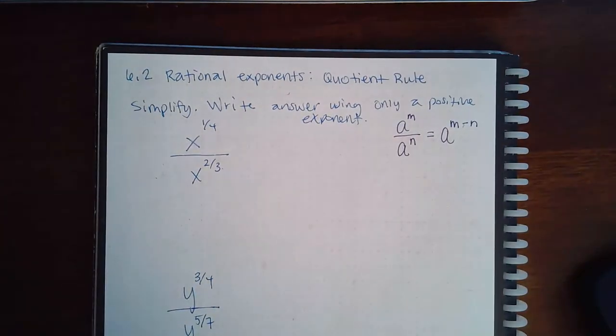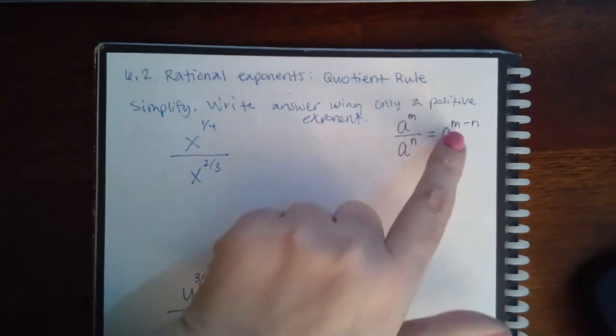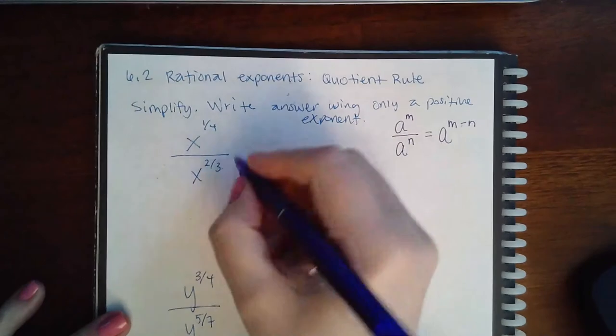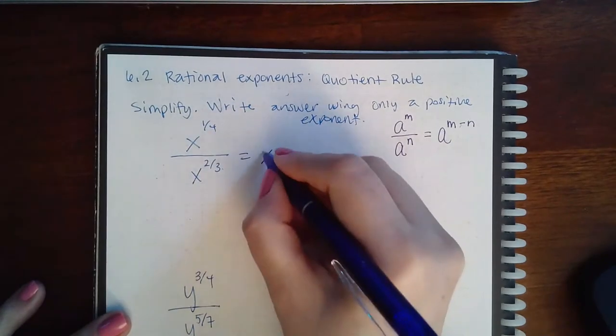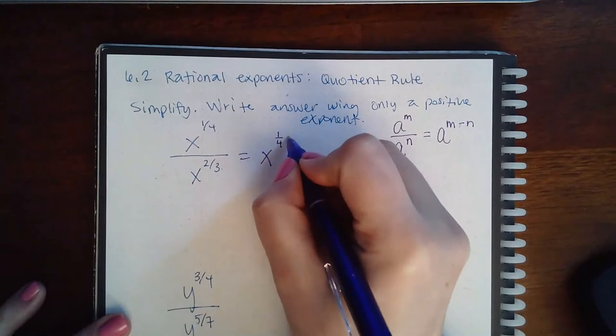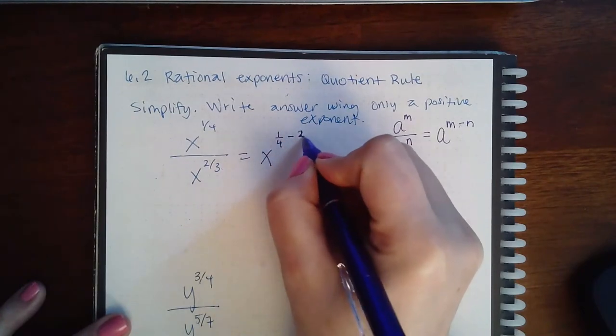But then you have to subtract the exponents, and it has to be the top exponent minus the bottom exponent. So for this problem, the base is x, so my base remains x, and then the new exponent will be the top exponent minus the bottom exponent.